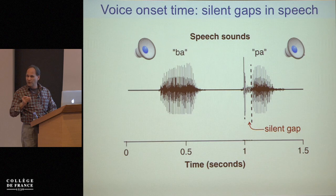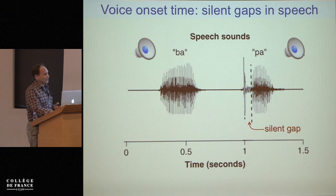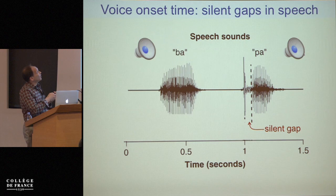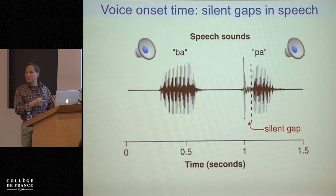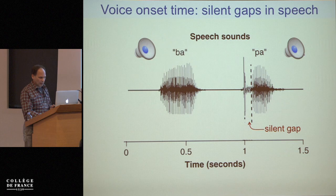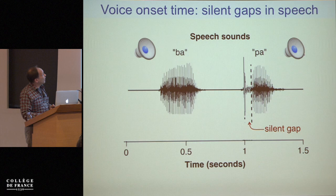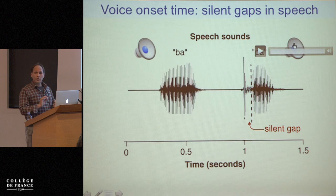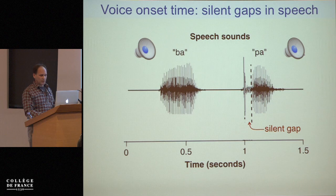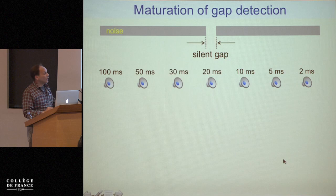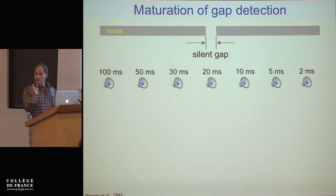I'm going to go through four examples. The first relates to gap detection — silent periods in our speech. These silent gaps are called voice onset times, and they allow us to distinguish between different phonemes. In the laboratory, independent of language, we can assess what the shortest gap is that one can hear, and look at how that develops over time.